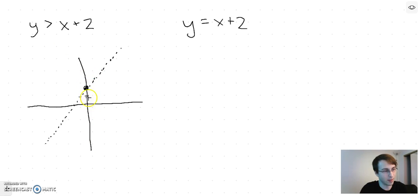For example, the y-intercept, or any point on the line, where y is 2 and x is 0, does not satisfy this. Because 2 is not bigger than 0 plus 2, so that's why we don't shade it in.